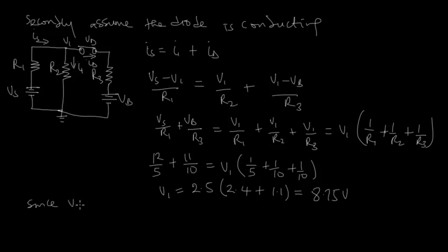Now, since V1 is less than Vb, it shows that the second assumption is wrong. Because usually current will flow from higher potential to lower potential. And we assume here that current Id flows from V1 to Vb.